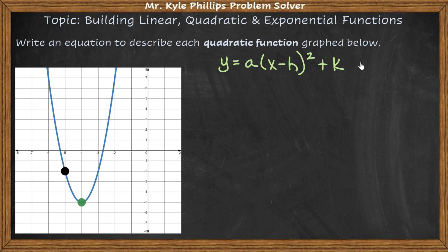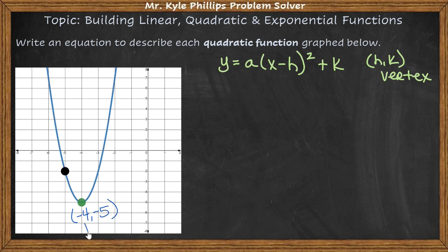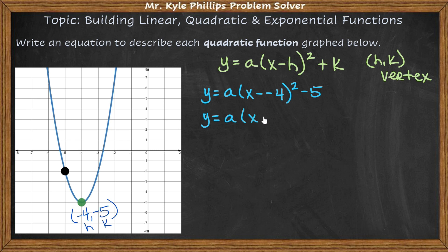In vertex form, h and k represent the vertex. Here is my vertex and it looks like it's at negative four, negative five. So that's the value of my vertex — this would be h and k. Writing that out, we have y equals a times x minus negative four, quantity squared, minus five, which simplifies to y equals a times x plus four, quantity squared, minus five. Now I need to know the value of a.